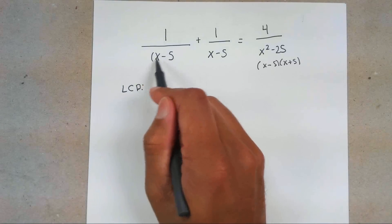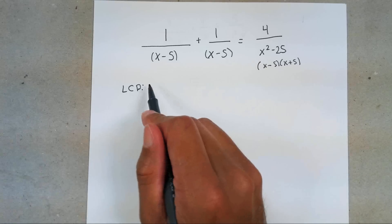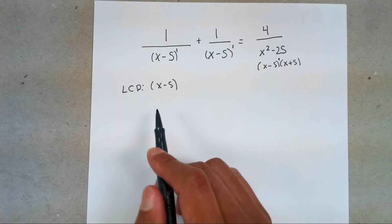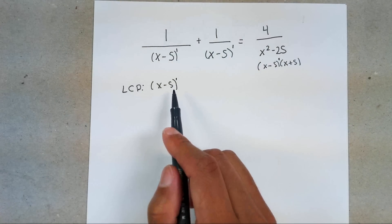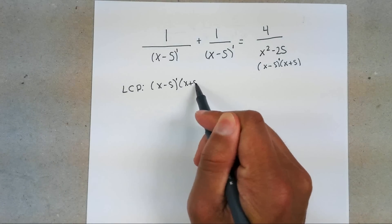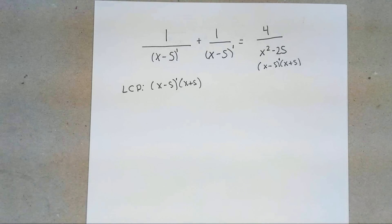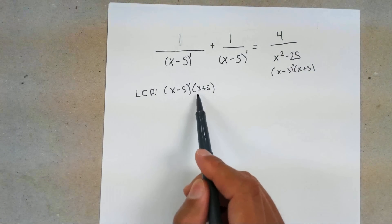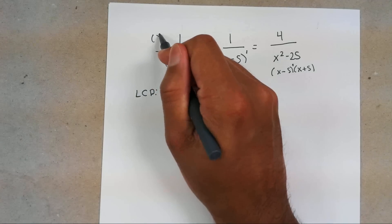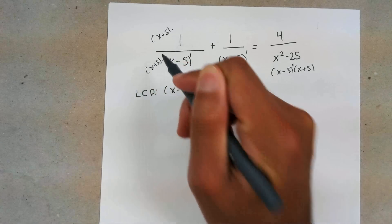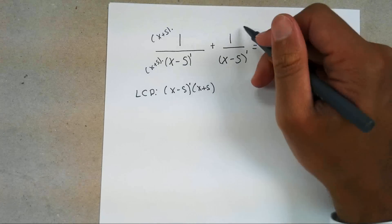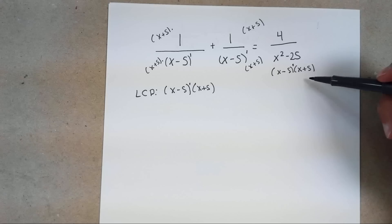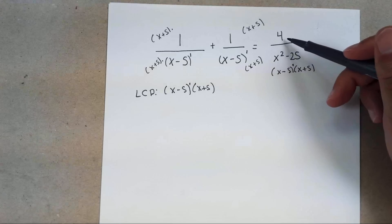Your denominators have X minus 5, so that's going to be part of your LCD. The reason it's just one X minus 5 is because all these X minus 5s are to the first power, so you only take one. Also, X plus 5 is in your LCD too — you have to make sure your LCD includes everything your denominator has. Now for the first expression, 1 over X minus 5 — what's missing? X plus 5, so multiply top and bottom by X plus 5. The middle one is also missing X plus 5. The last one, 4 over X minus 5 times X plus 5, is already your entire LCD, so you don't need to multiply 4 by anything.